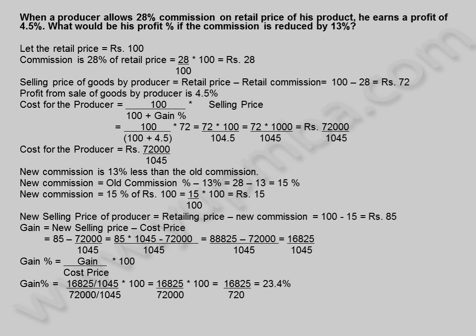16825/720 = 23.4%. The profit percentage of the producer if he reduces the commission by 13% is 23.4%.